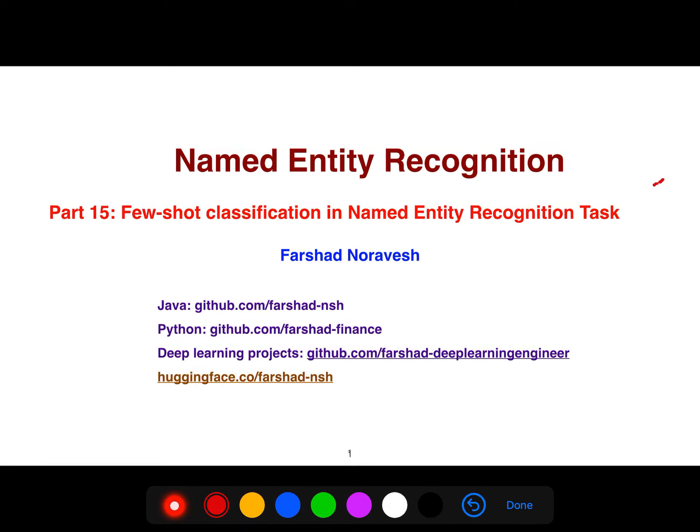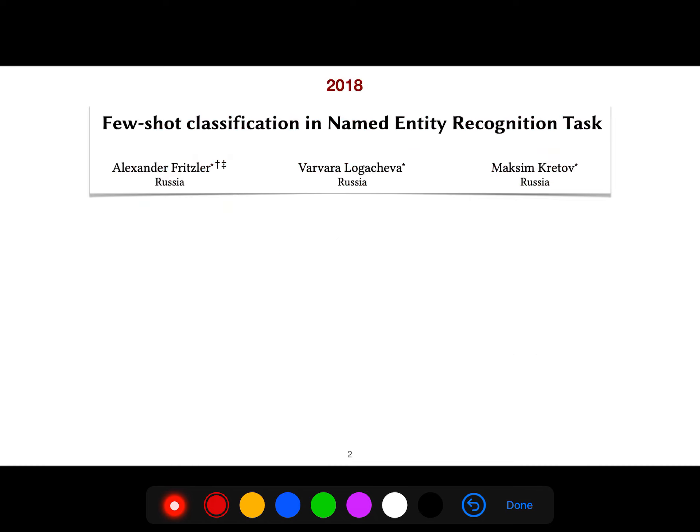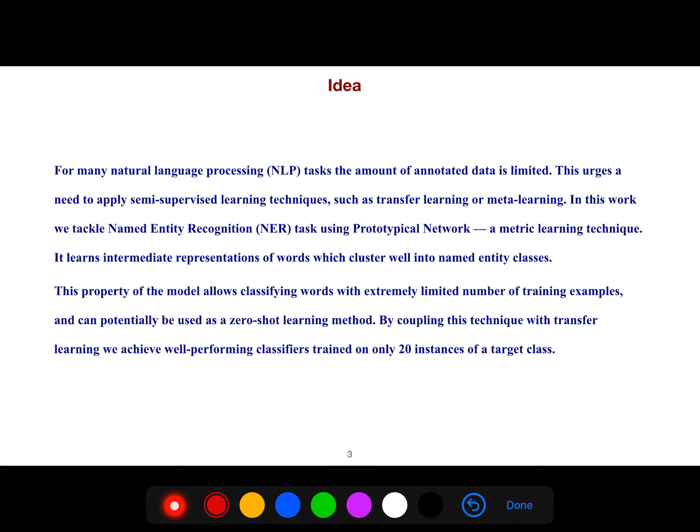In this lecture I'm going to be talking about another approach for named entity recognition using few-shot learning. Because we have data scarcity and limited data, from very few shots or very few examples we should be able to learn the named entities. I'm going to be focusing on this 2018 article.